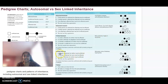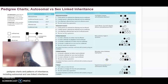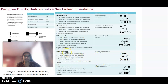For X-linked recessive: if a female is affected, her father must be affected; if a female is affected, her sons must also be affected. If a male is affected, his mother may be affected. The trait can skip a generation, being recessive. An example is red-green colour blindness.